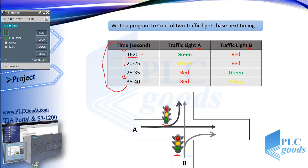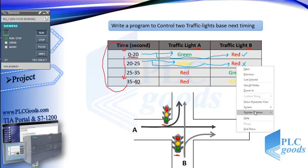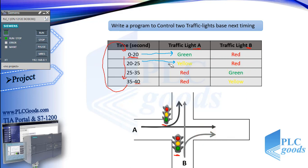Let me explain the first way. The first condition turns on green A, and it also turns on red B, so I can make a branch to turn red B on. But this approach is not correct in PLC programming. Why? The second condition turns on yellow A and red B. Now suppose the timer is at 10 seconds — based on the first condition, red B must be on, but the CPU turns it off because of the second condition. In other words, the second condition takes priority over the first. This program must be written based on outputs: I must use one output for each light and find what conditions turn them on.